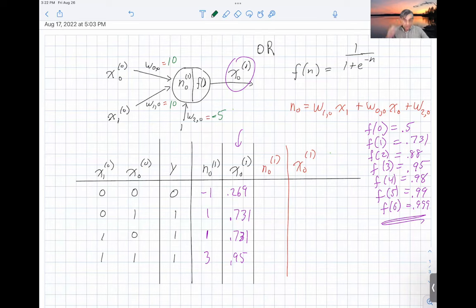When we do that, that very first row where the X's are both zero, that just leaves us with our bias term here for our net input. However, for the next two rows, we have zero times 10 plus one times 10 minus 5, which gives us a 5. And for the very last row, we have one times 10 plus one times 10 minus 5, which gives us 15.